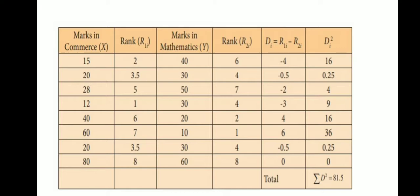Now take the difference of ranks: di = R1 minus R2. The differences are: 2 minus 6 = minus 4; 3.5 minus 4 = minus 0.5; 5 minus 7 = minus 2; 1 minus 4 = minus 3; 6 minus 2 = 4; and so on. Then compute di squared: (minus 4) squared = 16; (minus 0.5) squared = 0.25; (minus 2) squared = 4; (minus 3) squared = 9; (4) squared = 16; and others including 36 and 0.25. The summation of di squared equals 80.5.